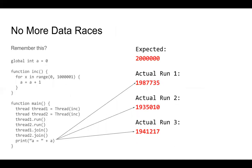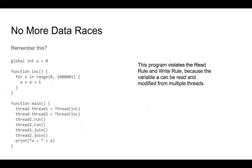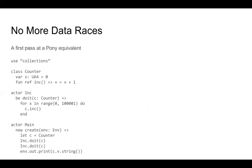Let's look at the program from the beginning of this talk — two threads incrementing a global variable — and how we'd do it in Pony. This program violates the read rule and write rule because variable a can be read and modified from multiple threads. Here's the first pass at a Pony equivalent: a counter that stores a value and can be incremented, and an incrementer which increments the counter. We create two actors, call the do-it behavior on them, then print the value at the end. The reason this doesn't work is that the two increment actors try to read and write to the counter — Pony would throw a compiler error about reference capabilities.